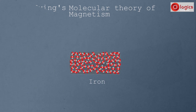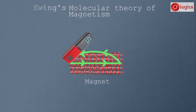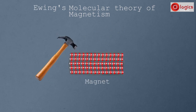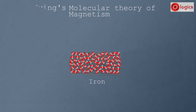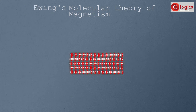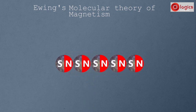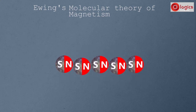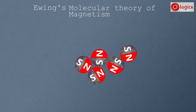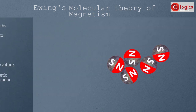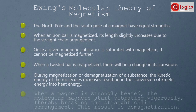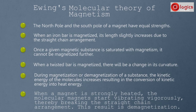Ewing's molecular theory explains what happens during demagnetization. A magnetic substance becomes a magnet on magnetization, and loses its magnetic property on demagnetization. When we demagnetize a magnet by heating, the heat causes molecules to start vibrating. On heating further, molecules vibrate vigorously and break the straight chain arrangement, placing themselves irregularly — the magnet gets demagnetized. So this theory explains that when a magnet is strongly heated, molecular magnets vibrate vigorously, breaking the straight chain arrangement, resulting in demagnetization.